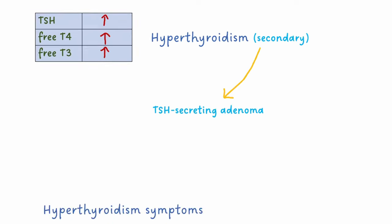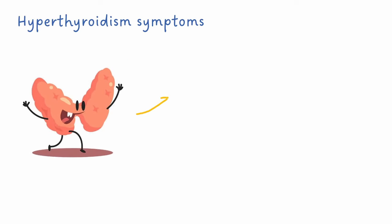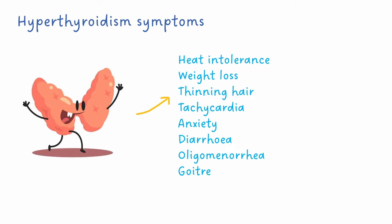Patients with hyperthyroidism can have a range of unpleasant symptoms. A simple way to understand why these symptoms occur is to imagine what you would feel like if all your cells were working fast, burning through calories and producing heat. This is what's happening in hyperthyroidism.